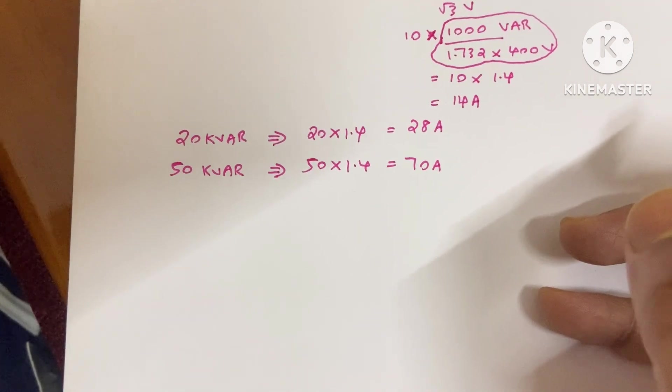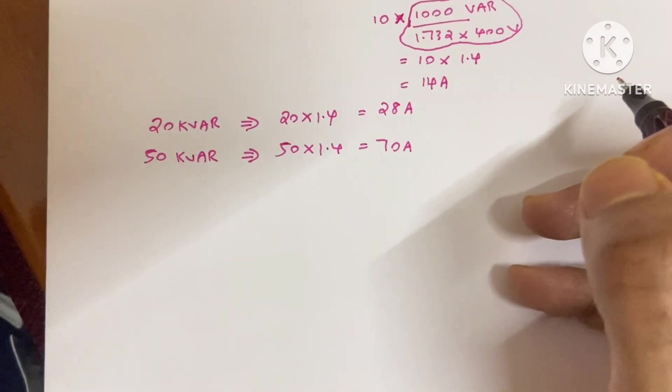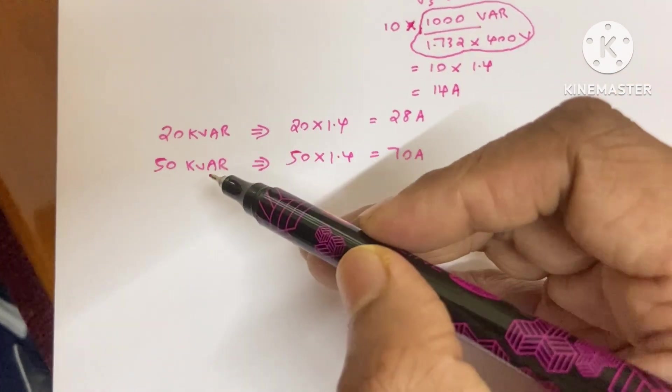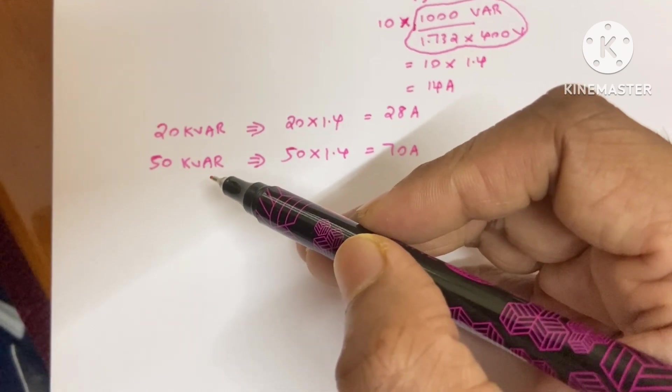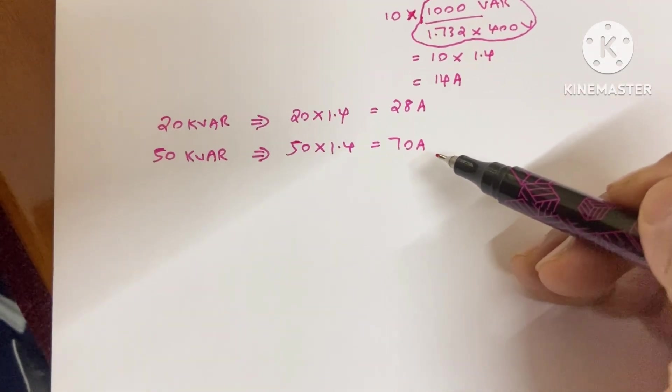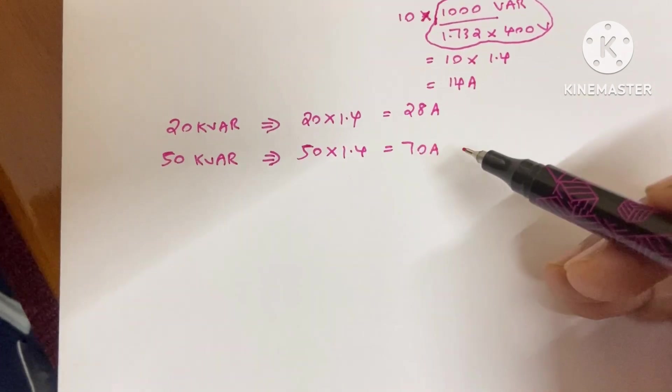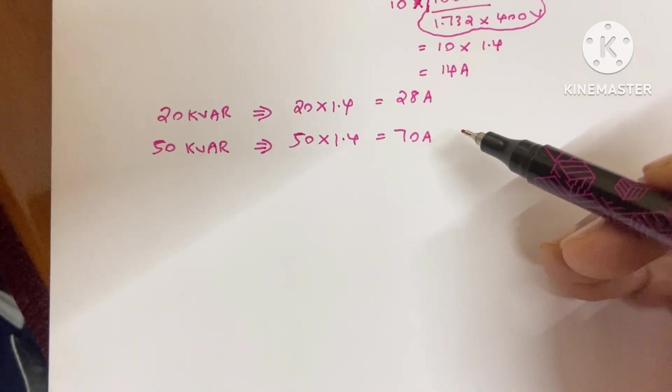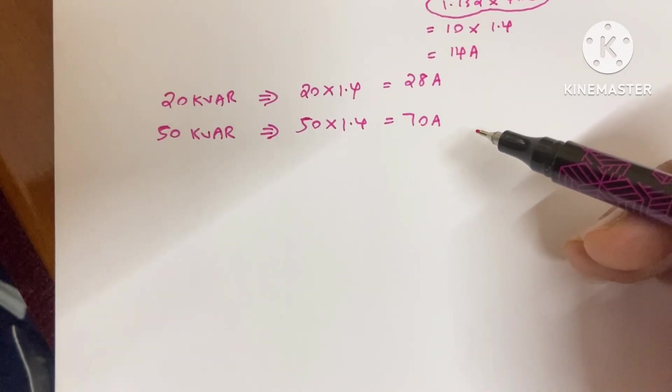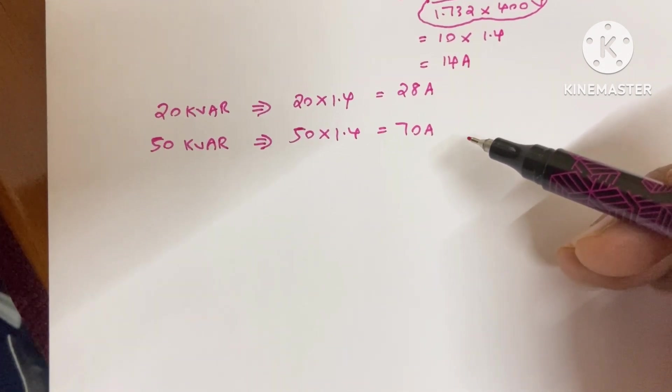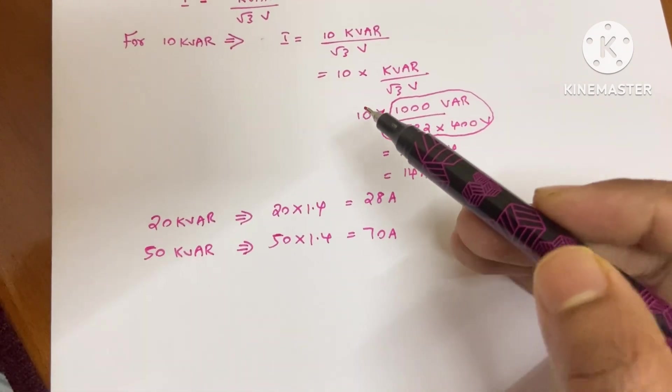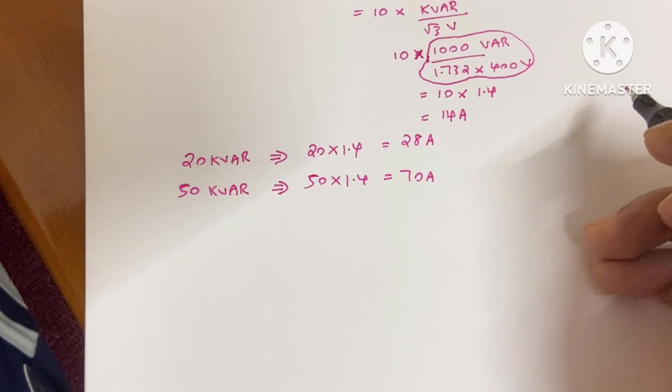This trick will be very useful for interviews. Now that you have the current for the capacitor bank, you can size your breakers and cables accordingly. This will be very useful and saves time. You don't need to write out all the equations to find the current. I hope you got my point.